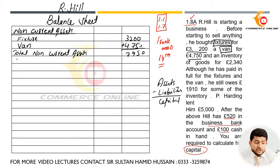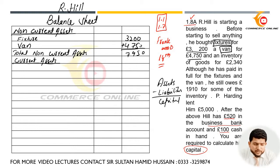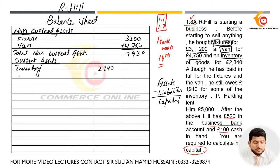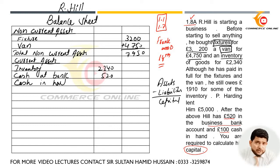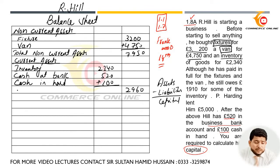Then after non-current assets, we need to find current assets. Current assets start with inventory of goods, that is £2,340. I will write inventory: £2,340. Cash at bank: £520, and cash in hand: £100.